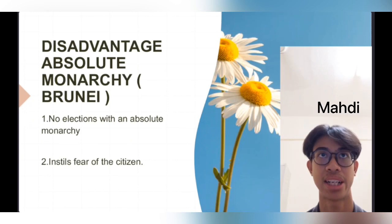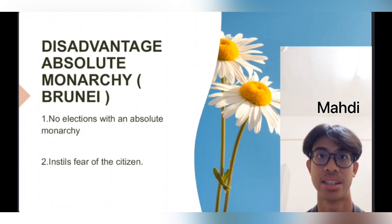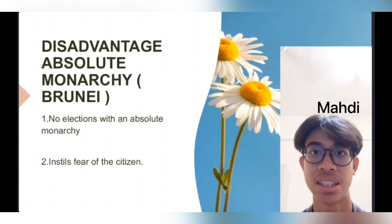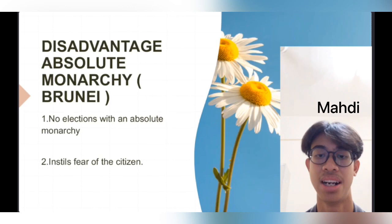The advantages of absolute monarchy in Brunei include: first, no elections — the royal family remains in power in an autocratic government as long as they remain in position, and unlike a democratic country, there will be no vote. Second, instilling a sense of governance — with only one entity holding the level of governance in an absolute monarchy, the government maintains individual compliance.